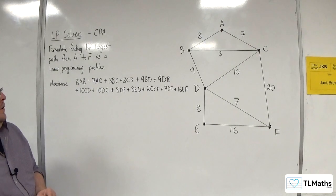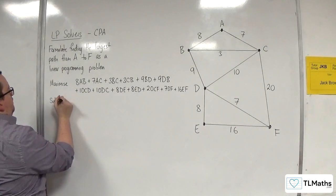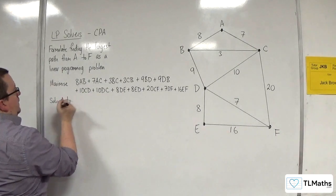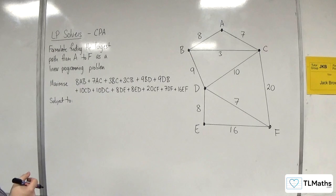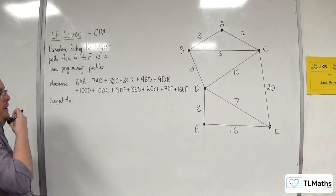Right, so hopefully that's all of them. Okay, so now for the constraints. Subject to: we want a constraint for each of the vertices, so let's start with A.